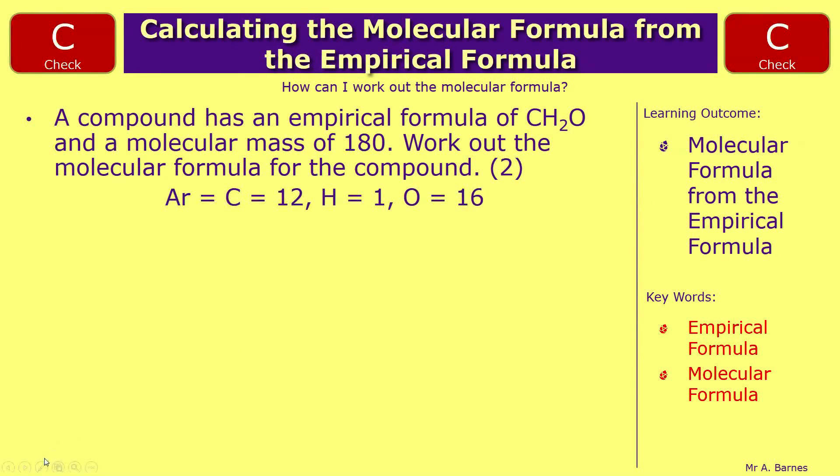Okay, let's see how well you've done then. So your first marking point is for working out the molecular mass. So carbon has an atomic mass of 12, and there's one of them. Hydrogen, atomic mass of 1, there's two of them. And oxygen, atomic mass of 16, and there's one of them. Add all that together, and you get 30. So one mark for having that.